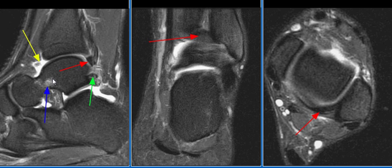There is osseous edema at the talar neck and roof of the sinus tarsi, consistent with a trabecular stress injury. The MR findings are compatible with posterior impingement due to a posterior labrum or thickened transverse ligament.